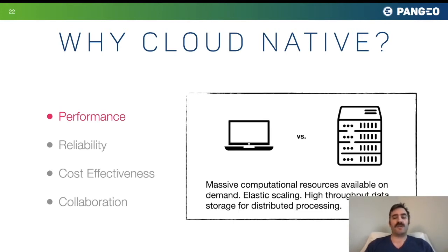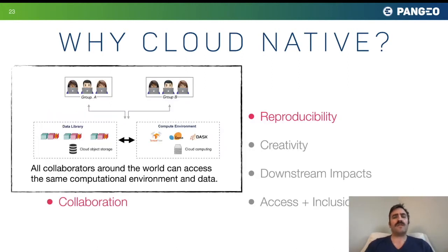A huge motivation is performance. With massive terabyte or petabyte scale datasets, cloud computing lets us take advantage of massive computational resources, elastic scaling, and high-throughput data storage for distributed processing. But it's more than just computing — cloud-native computing also supports collaboration and reproducibility by providing all collaborators across the world access to the exact same computational environment and data, rather than each scientist working in their silo.